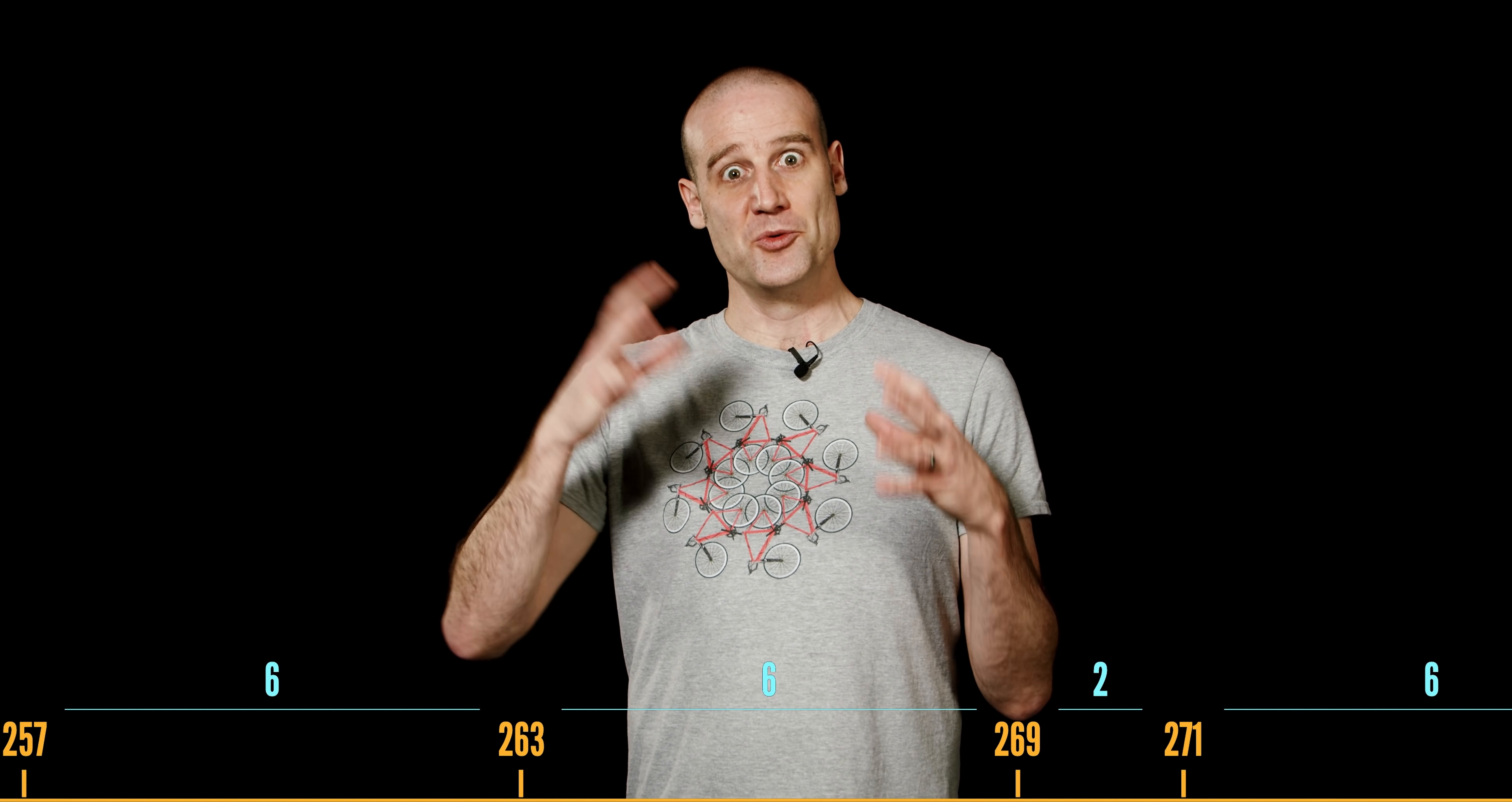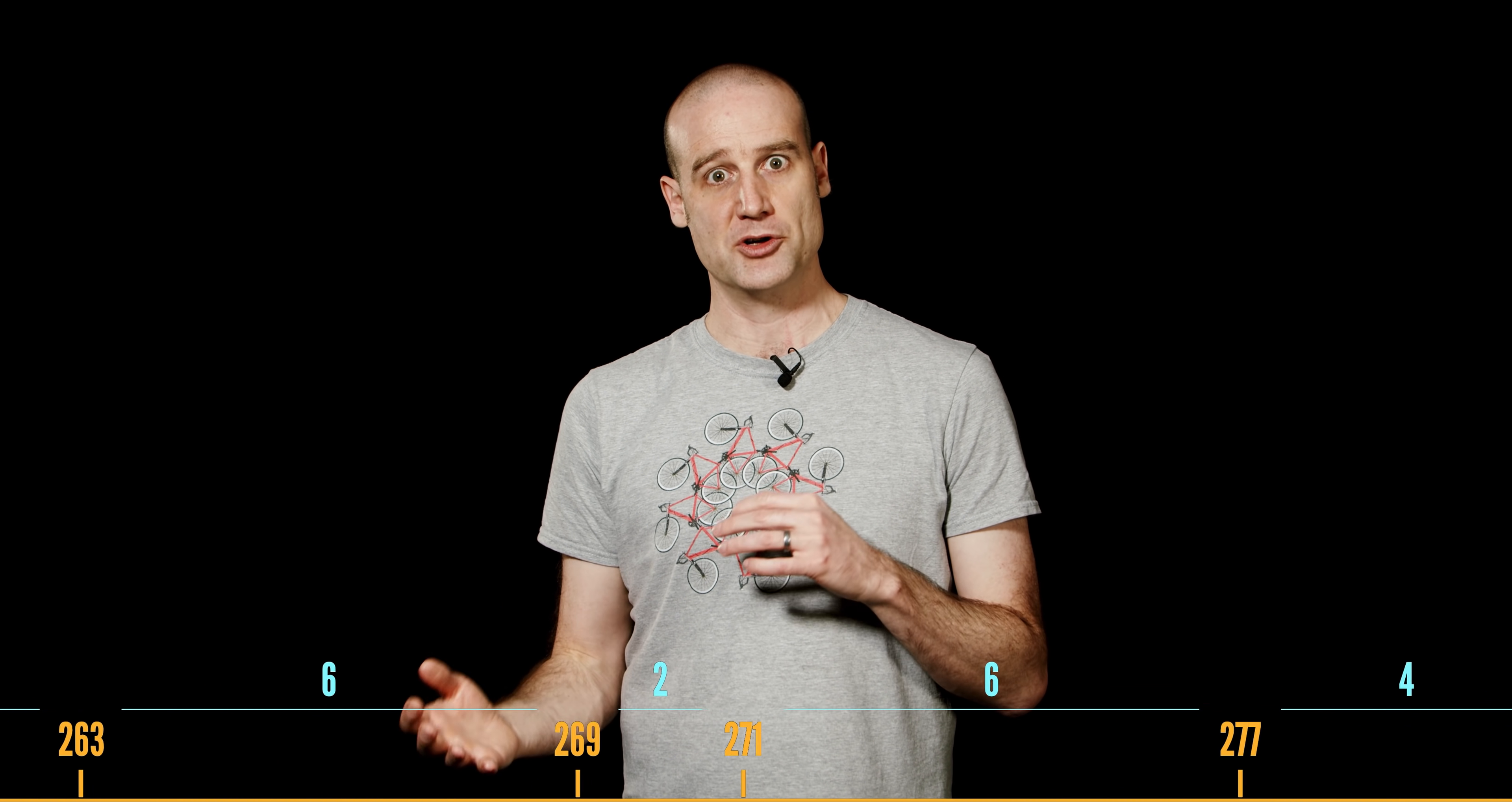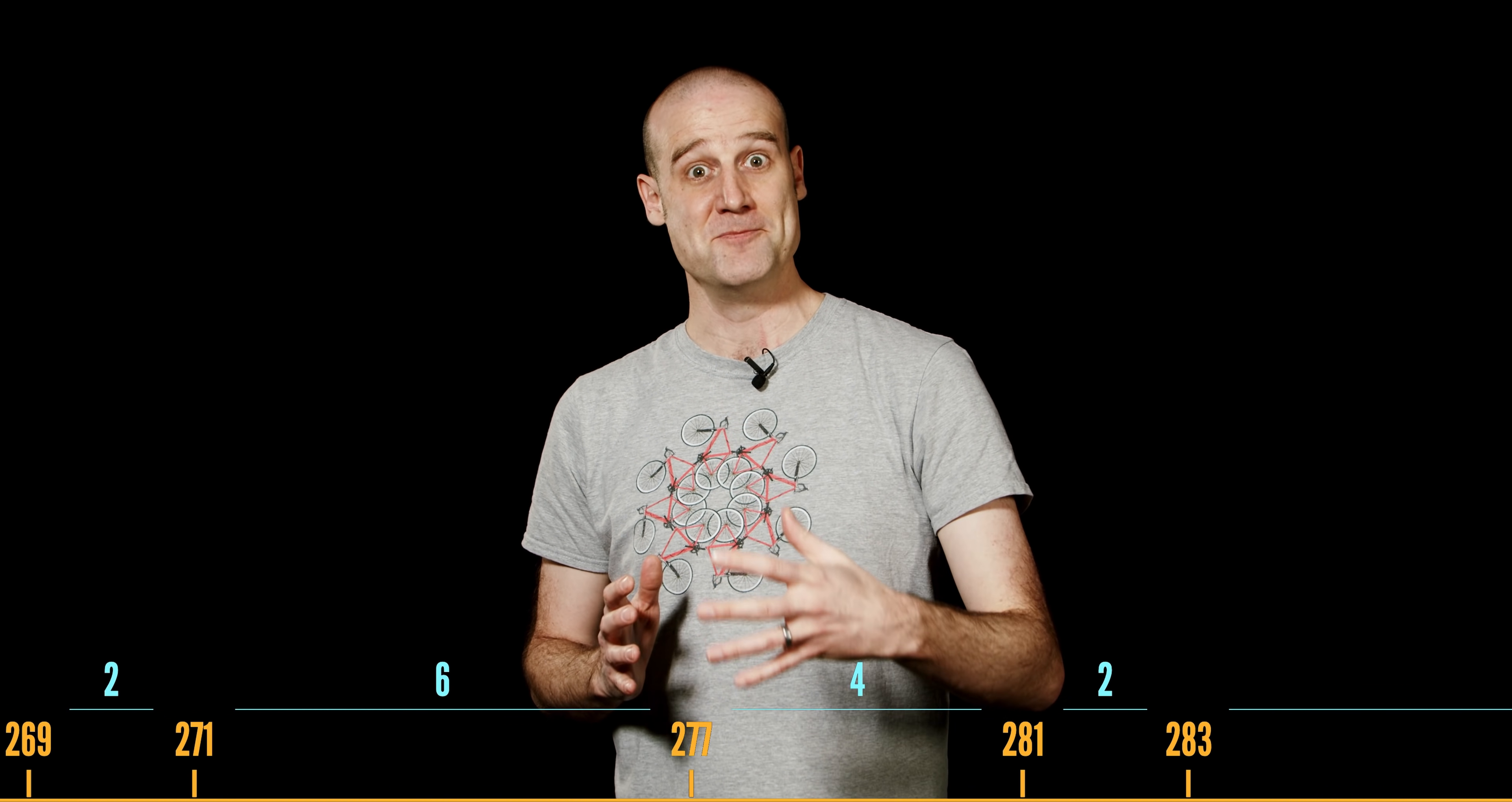So in theory, if we were to work out an equation for the distribution of gaps and then multiply every gap by its size and add them all together, it should give us the next prime number.